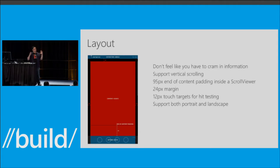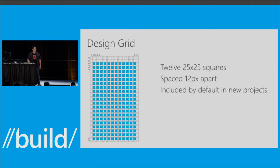Support both portrait and landscape. I find myself turning my 920 landscape a lot more for reading articles and rich content, so if you can, support landscape too. Also use the design grid — it's an overlay image that ships with all projects. Turn it on and see if your controls line up. It's the same grid the design studio uses for first-party applications. If you align things to this grid, your layout actually does magically look more professional.